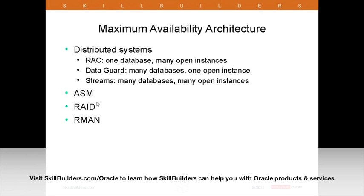I've included some enabling technologies for completeness. ASM — Automatic Storage Management — is Oracle's solution for shared, highly available, and high-performing storage. I'll try to persuade some of you to use it who perhaps aren't. Never forget it's suitable for single instance environments as well as distributed systems. RAID is underlying technology that can be integrated into a maximum availability architecture. I've also included RMAN recovery manager because backups come into this too. But RAC, DataGuard, and Streams are the three I really want to talk about.